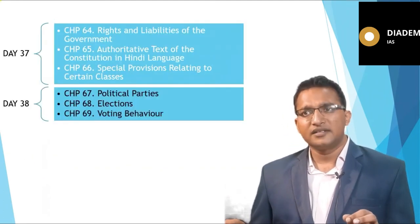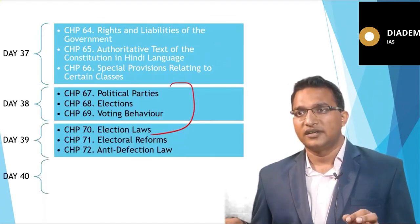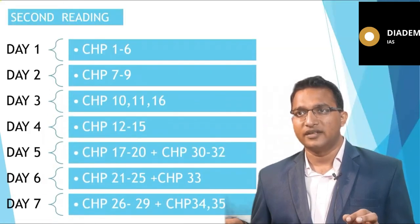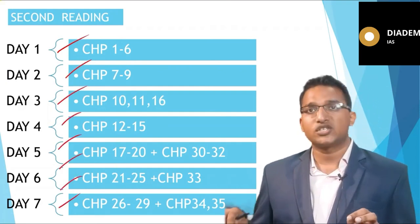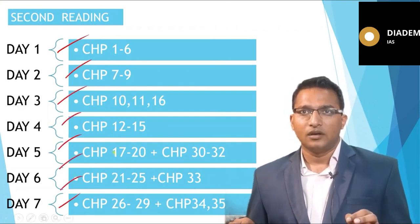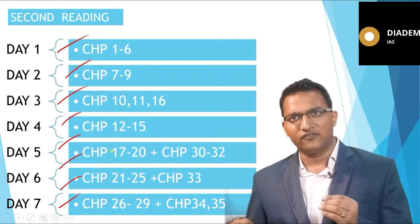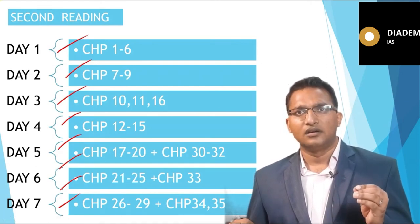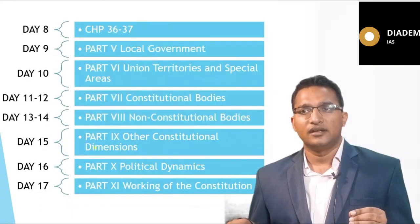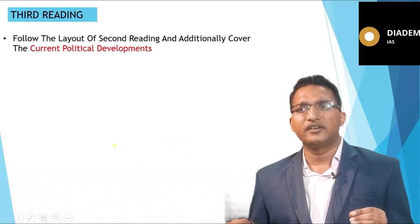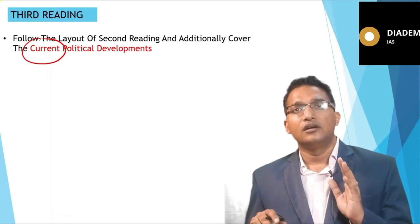Interrelated chapters should be studied together. Further topics include Panchayati Raj, municipal bodies, union territories, schedules of tribal areas, Election Commission, special officer for linguistic minority, UPSC, SPSC, Finance Commission, National Commission for SC, National Commission for ST, Attorney General of India, Advocate General of India, Niti Aayog, Lokpal, National Human Rights Commission, and remaining chapters. A PDF of this PPT will be pasted below this lecture for your reference.